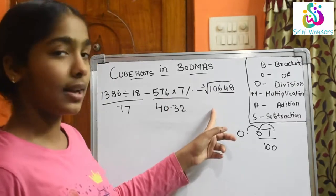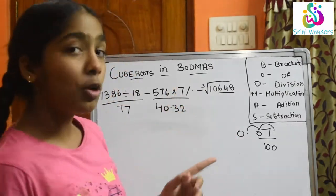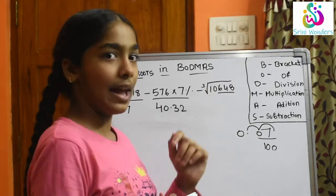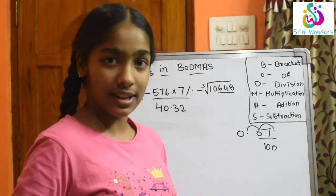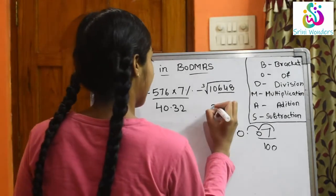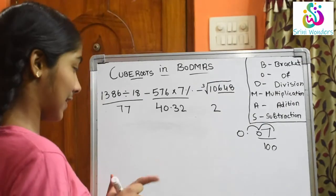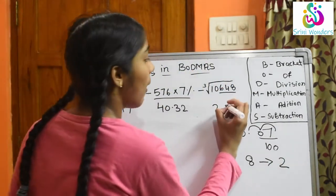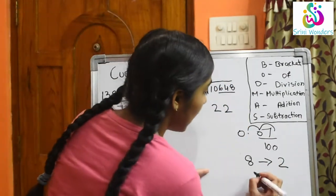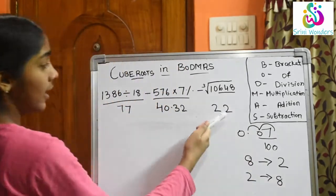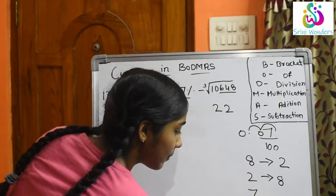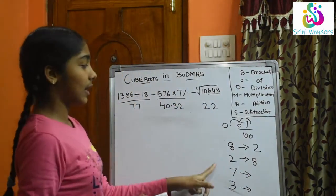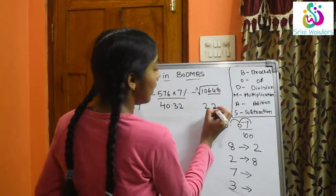10 will come in the range of 2 and 3. Here 2 cubed is 8, and 3 cubed is 27, so 10 falls between both. The range is 2 and 3, and we take the smaller range which is 2. Now for the last digits: if 8 comes we write 2, if 2 comes we write 8, if 7 comes we write 3.